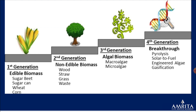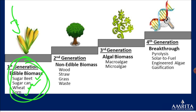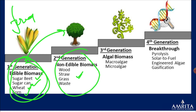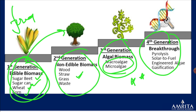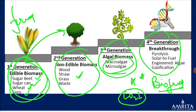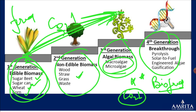First generation biofuels come from edible mass — sweet corn, wheat, sugar beet. Second generation comes from non-edible biomass such as wood, straw, and grass — a better generation. Third generation includes cyanobacteria and algae. Fourth generation is still under conceptualization — through genetic modification, it aims to reduce carbon dioxide from the atmosphere. All current biofuels add CO2, but the fourth generation could make energy production carbon-negative.